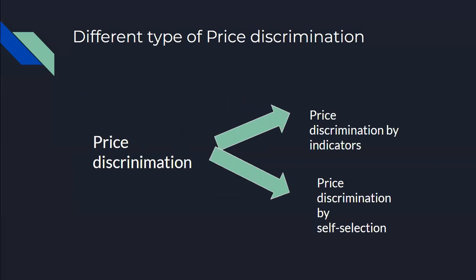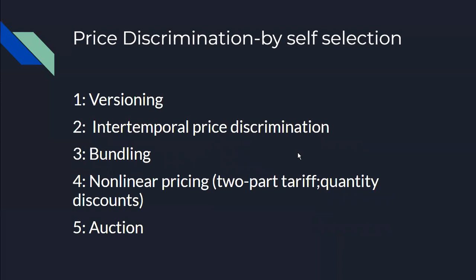In class we have two types of price discrimination. The first is price discrimination by indicators, meaning market segments can be directly identified. The second is price discrimination by self-selection, meaning market segments cannot be clearly identified.